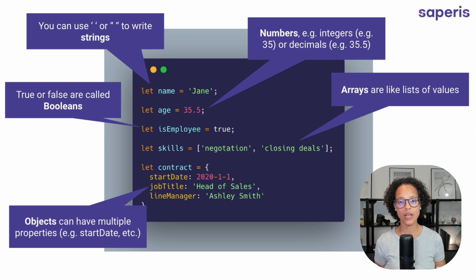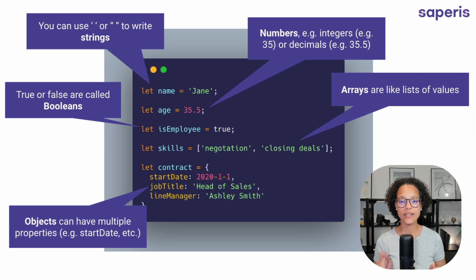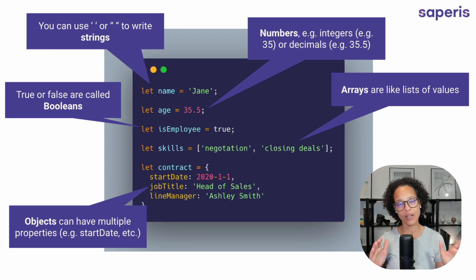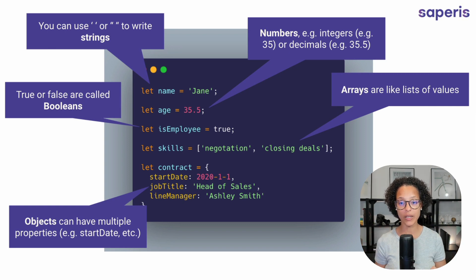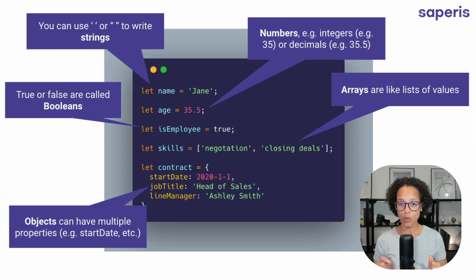Then 'isEmployee' shows us the type of Boolean. Boolean means it's either true or false. And again, we don't write a Boolean with quotation marks. 'Skills' — that is an array. You can think of an array as a list type. In 'skills' we have a list of skills, written within square brackets, which is always a visual hint that this is an array. Within that, you can store strings, but you could also store numbers, Booleans, and so on. Note — 'negotiation', 'closing deals' — what is that for a data type within our array? If you know, write it in the comment section below.